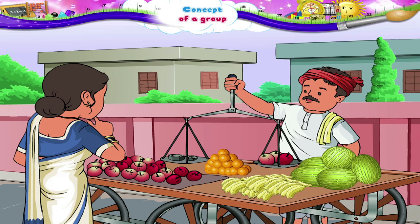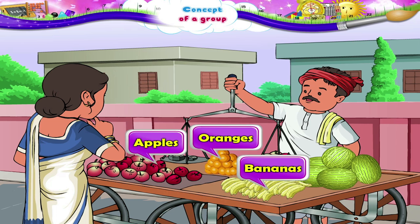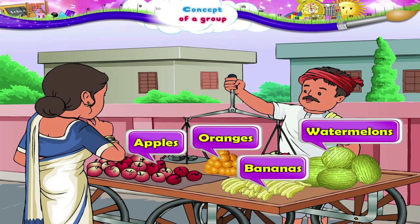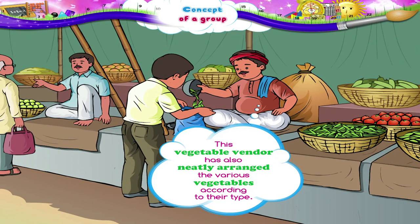Look at this fruit seller. The apples, oranges, bananas, and watermelons are kept in separate groups. This vegetable vendor has also neatly arranged the various vegetables according to their type.